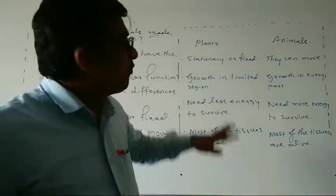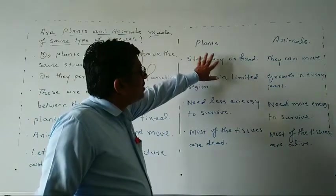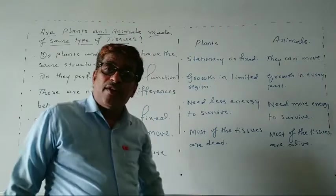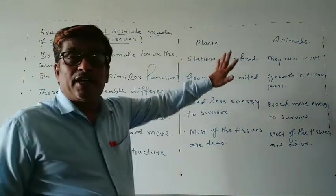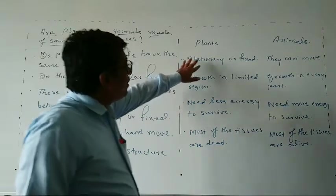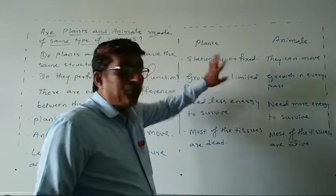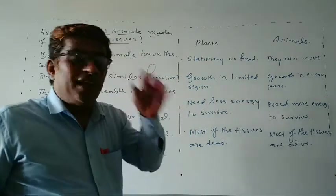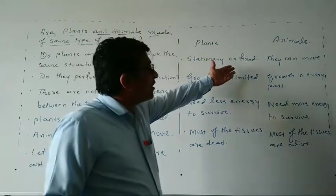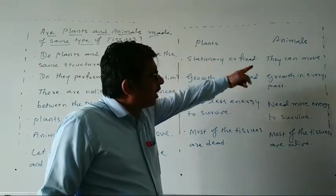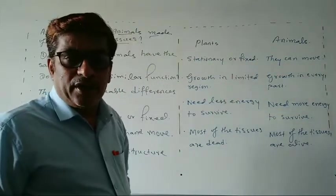Now we will see the differences between plants and animals — this can be asked as an examination question. The first point: stationary or fixed. Plants are stationary, meaning not moving, or you can say they are fixed. But animals can move. You have to make a table like this.